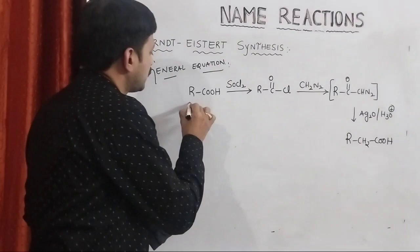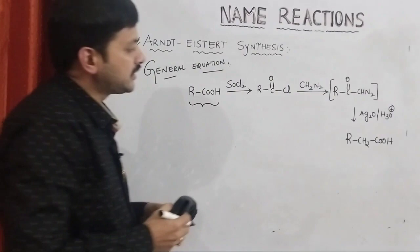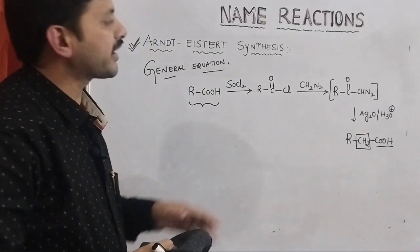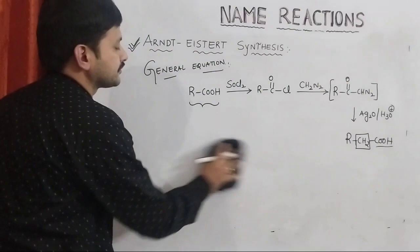What we observe: in the reactant we have a carboxylic acid, and in the product also a carboxylic acid, but one CH2 unit has been increased in the carbon chain. Let's see the mechanism — how this particular transformation takes place.